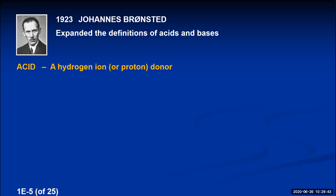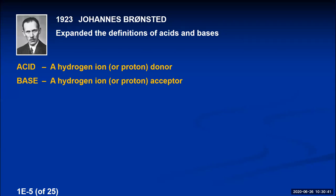The Bronsted-Lowry definitions proposed that an acid is a hydrogen ion donor — anything that donates a hydrogen ion (also called a proton, since a hydrogen ion is just a proton after its electron is removed). A base is any substance that accepts a hydrogen ion — it's a hydrogen ion or proton acceptor.